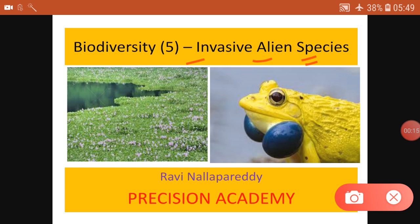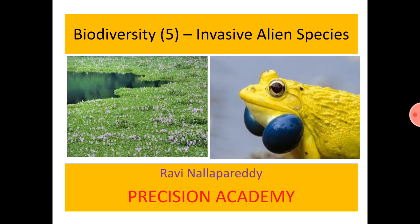The regular IAS we talk about are the servants of the nation — they are the heroes. But this one, Invasive Alien Species, these are the villains. This is the second most important reason for biodiversity getting affected, species getting endangered and extinct.